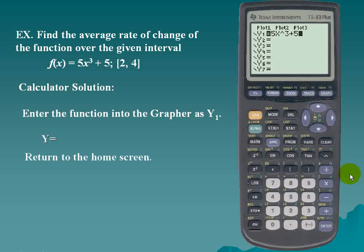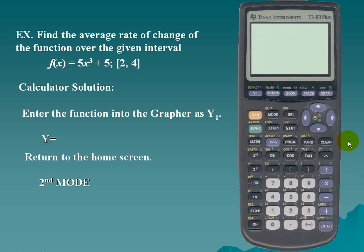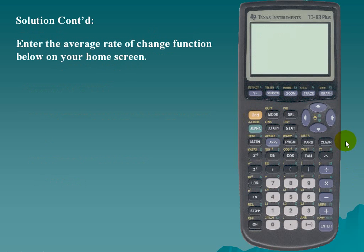And the next thing we're going to do is return to the home screen. So we should use second and mode. Next we'll enter the average rate of change function below.